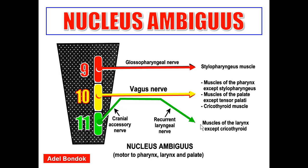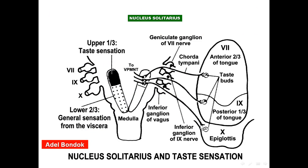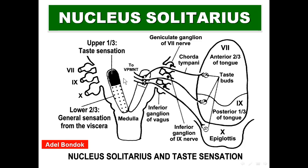Therefore, nucleus ambiguus supplies muscles of the pharynx, muscles of the palate, and muscles of the larynx. Paralysis or infarction of nucleus ambiguus causes paralysis of those muscle groups. The nucleus solitarius, or solitary nucleus, is divided into upper third and lower two thirds.